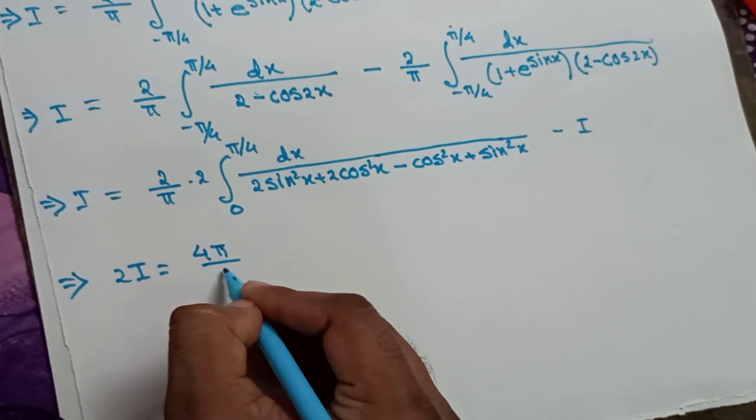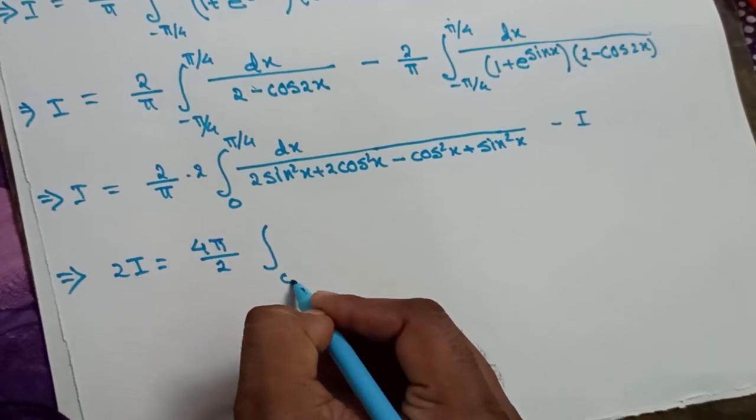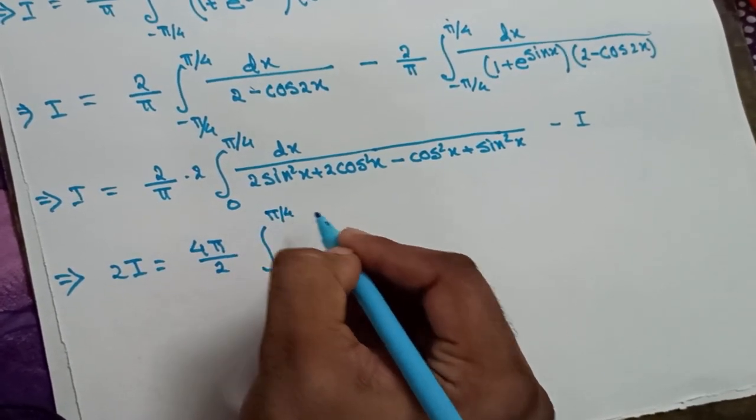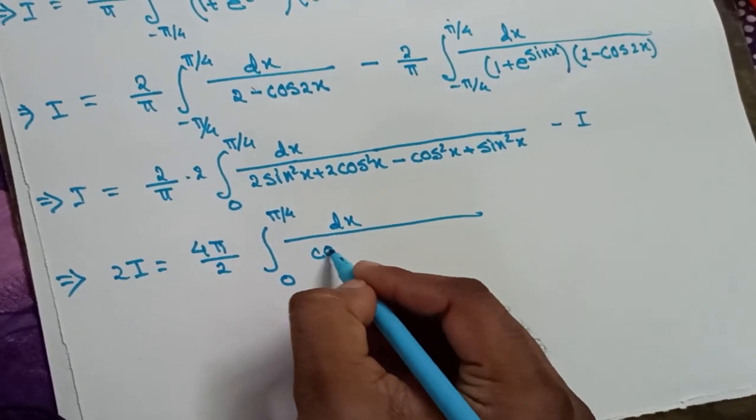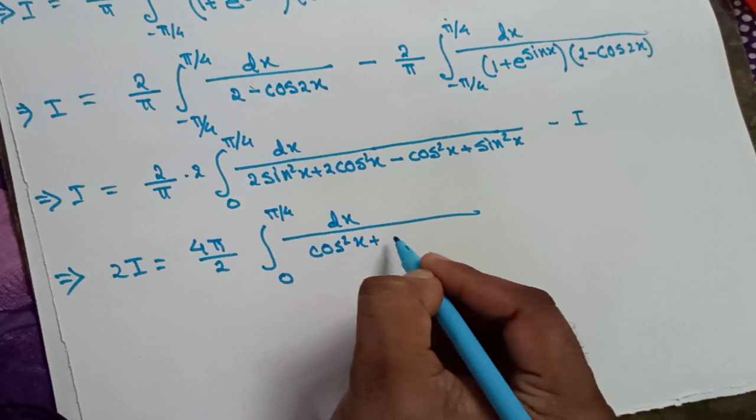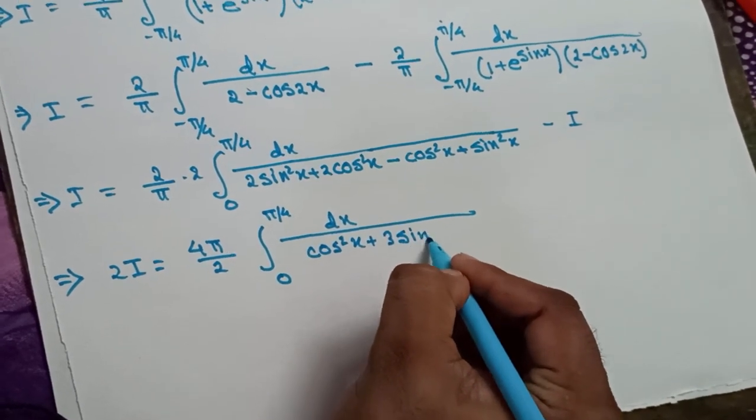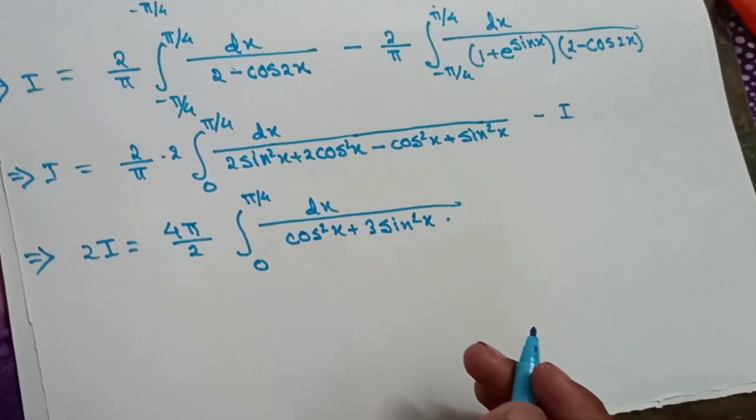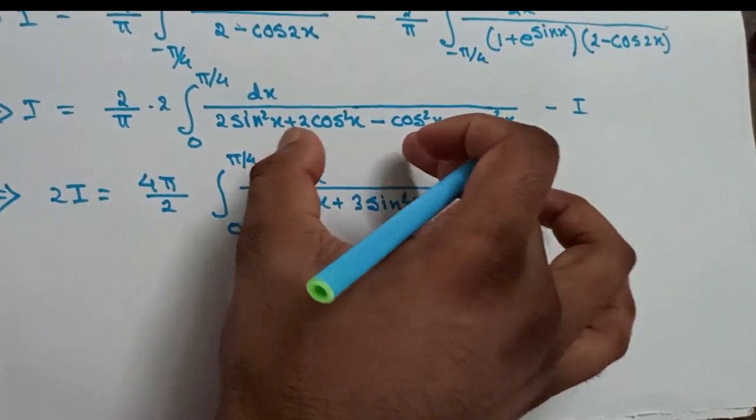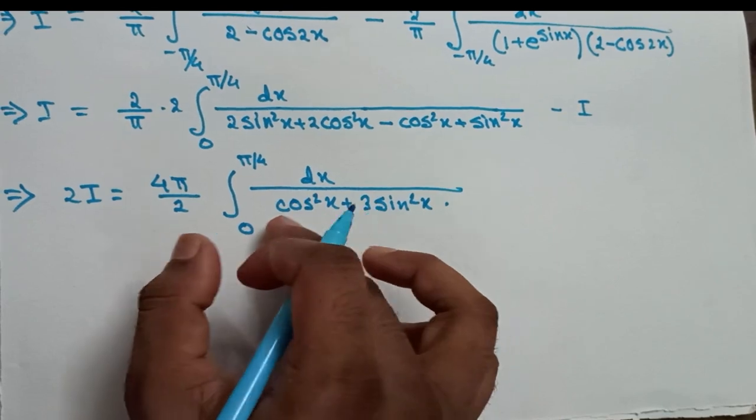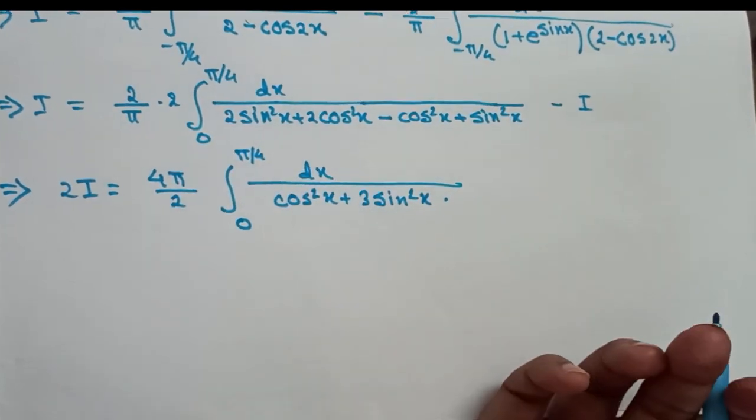Now everything is familiar. Whenever we get this type of thing, what we do is divide both numerator and denominator by cos² x, and then we substitute tan x with some new variable. Let's proceed in the next step.